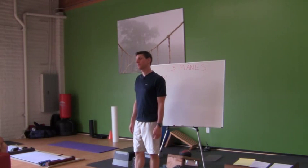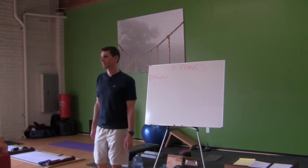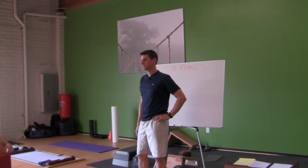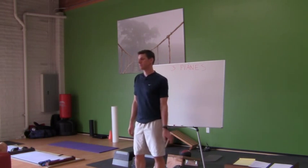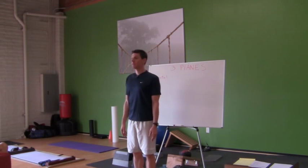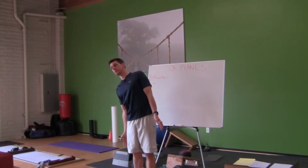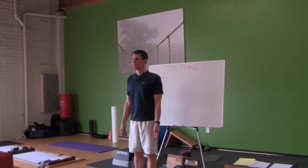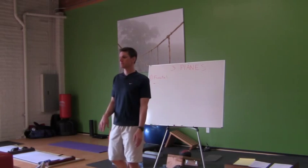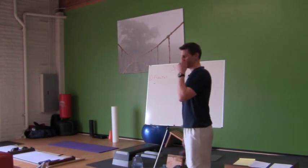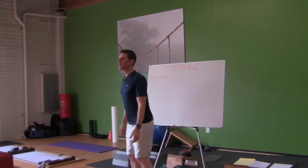In the frontal plane, the body is split into anterior and posterior halves. We're able to move with ABduction and ADduction. And there are some other movements — right lateral bend and left lateral bend through the spine. It can happen at the cervical spine, lumbar spine, and thoracic spine. The correct term is actually right lateral flexion and left lateral flexion, not bend. We'll say bend to our clients, but the correct term is lateral flexion.